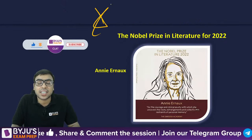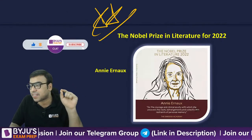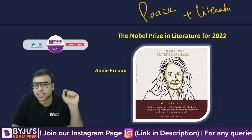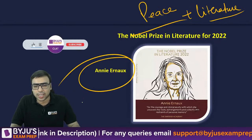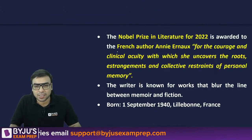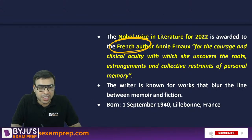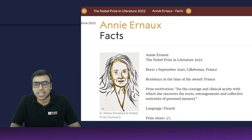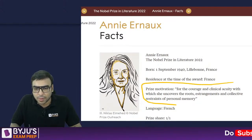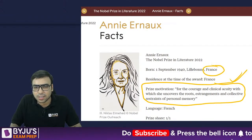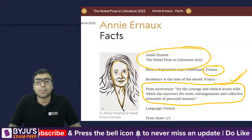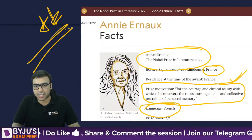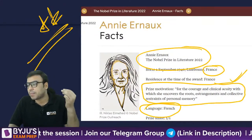Nobel Prize in Literature and Nobel Peace Prize are generally considered very important. The Nobel Prize in Literature has been given to Annie Ernaux. She is a French author. The prize motivation relates to personal memory. Remember her name and the language — French — as they can ask which language she writes in.